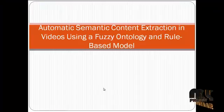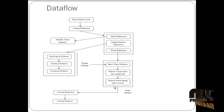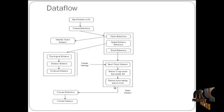Next we are going to see the data flow of this process. First we input an OWL data, and after that we extract the content of the video data. For that we have categorized it: first we identify the instances on objects, which is the object extraction — instances are nothing but a number of different objects. After that we find out the spatial relation extractions. For the spatial relation extraction there are three kinds of spatial relations found by means of the ontology domain extraction algorithm.